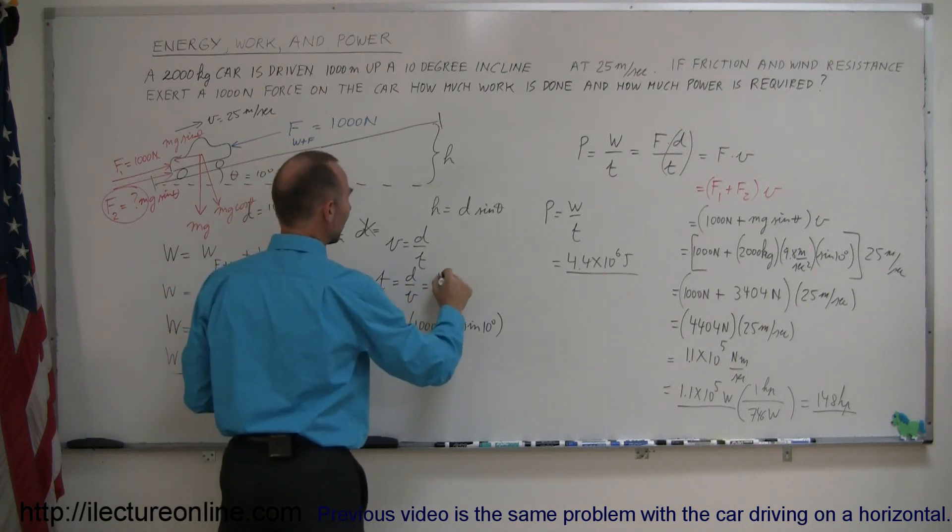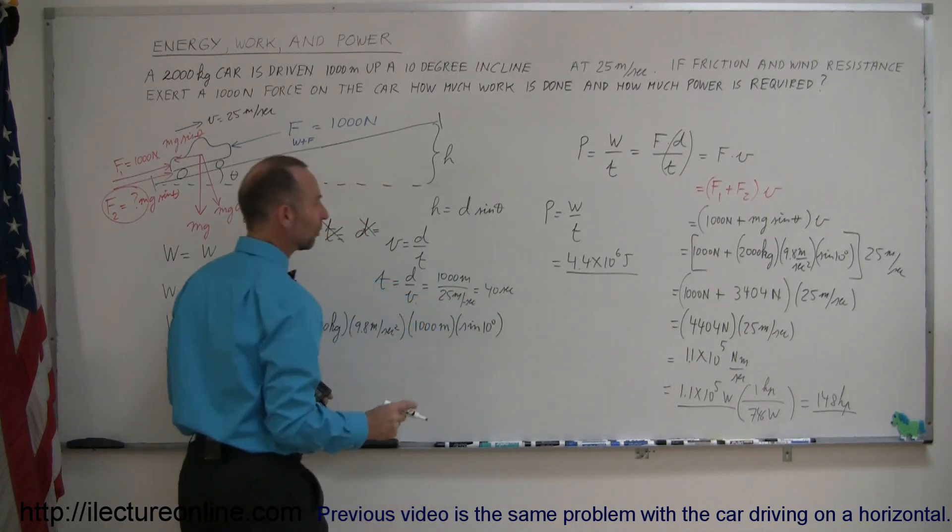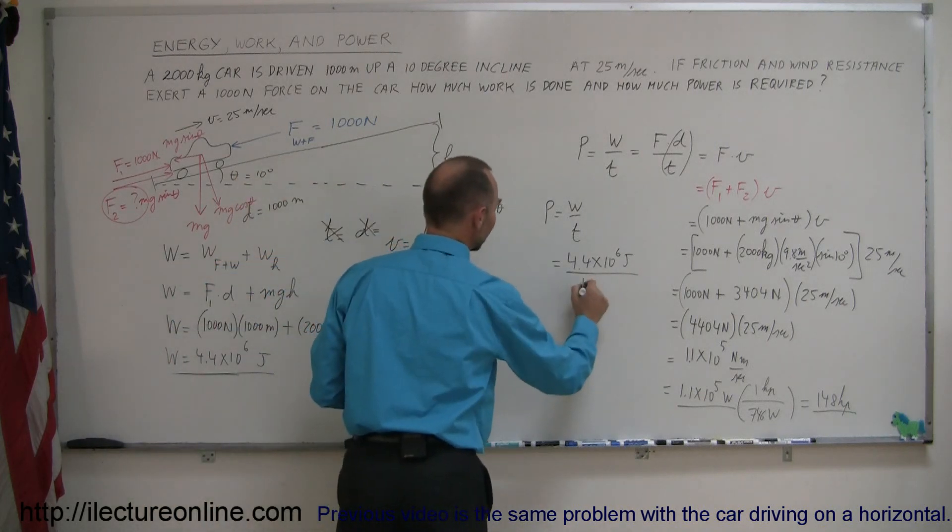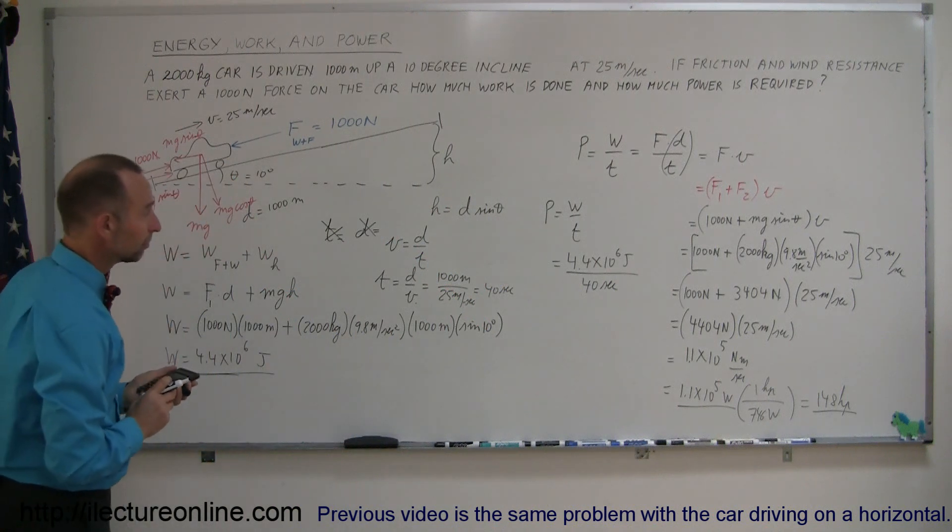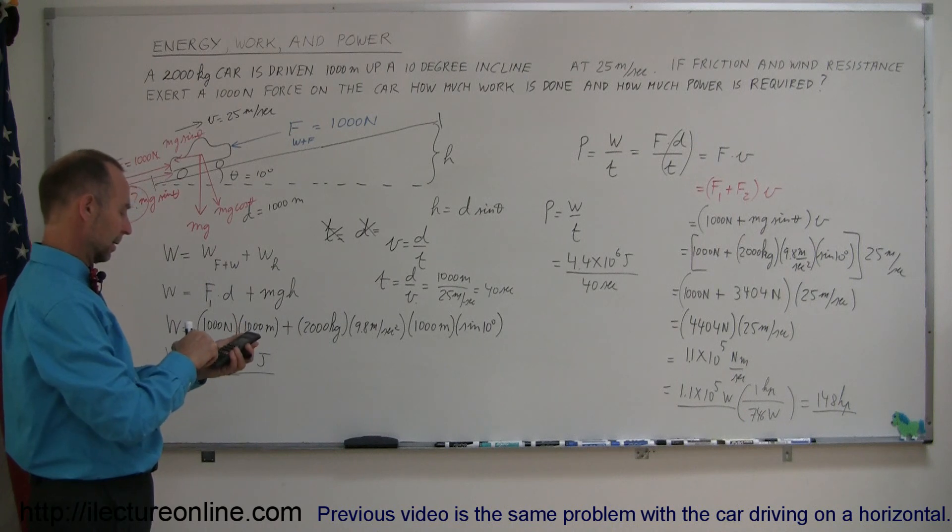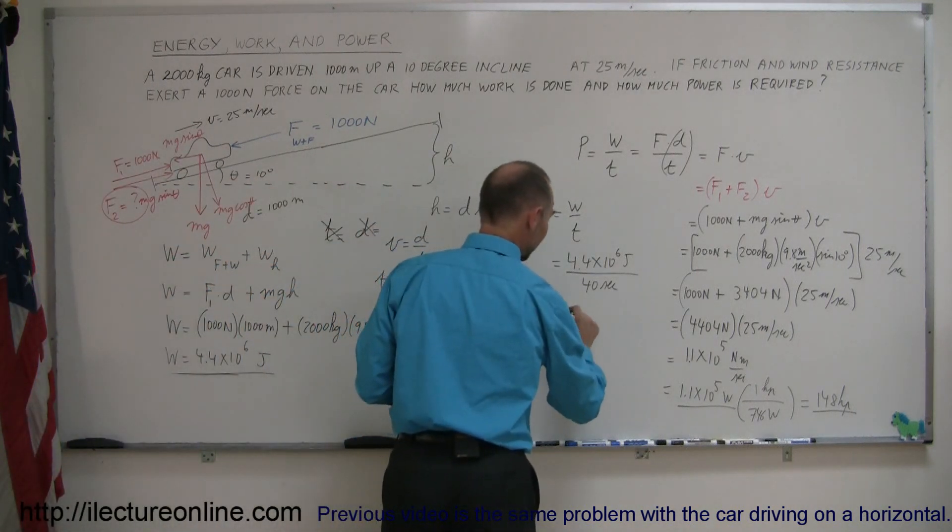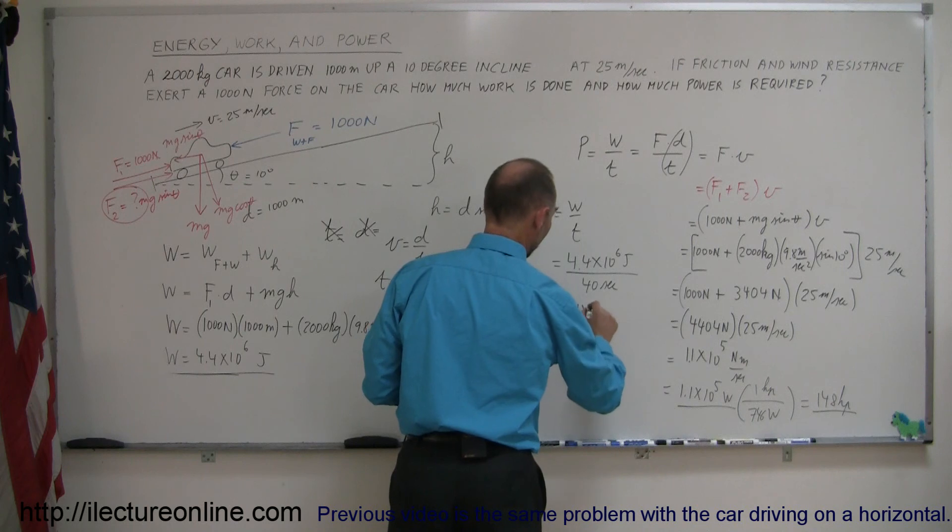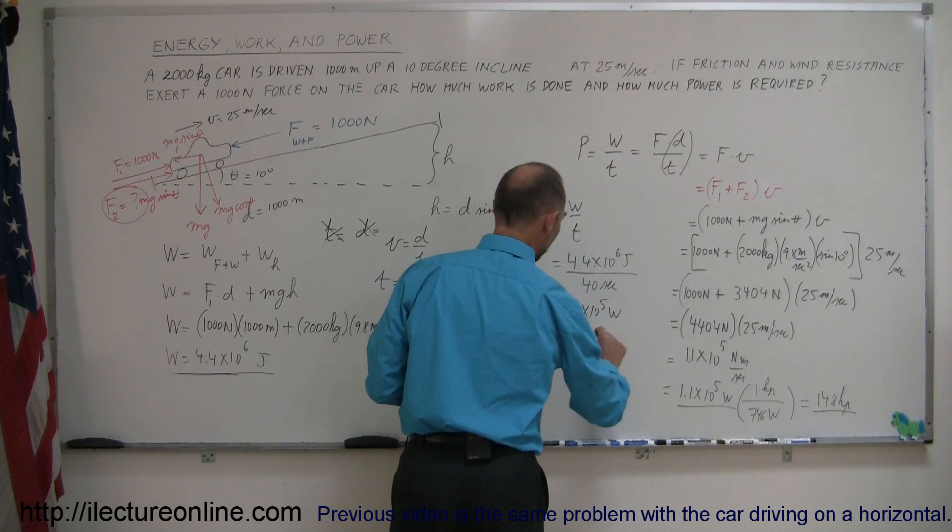So, if the distance is 1,000 meters divided by velocity of 25 meters per second, that's 40 seconds. So, if we take this number and divide this by 40 seconds, the time that it takes that car to drive 1,000 meters, 4.4 times 10 to the sixth divided by 40 equals, and guess what? We get the exact same answer of 1.1 times 10 to the fifth watts, which converted to horsepower is 148 horsepower.